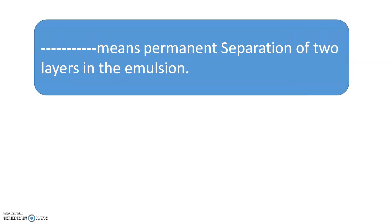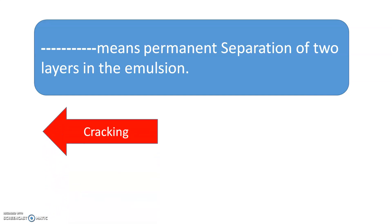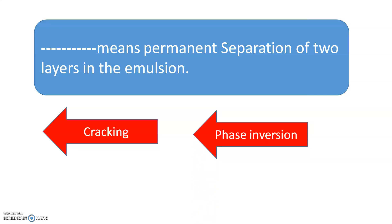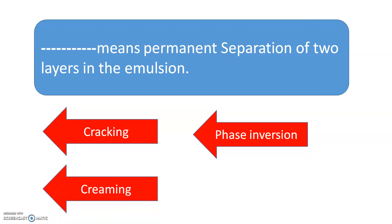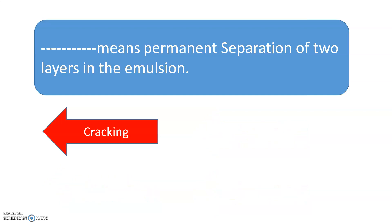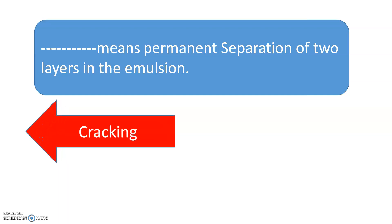Which term means permanent separation of two layers in the emulsion? The options are: cracking, phase inversion, creaming, or mixing. The correct answer is cracking — cracking means permanent separation of two layers in the emulsion.